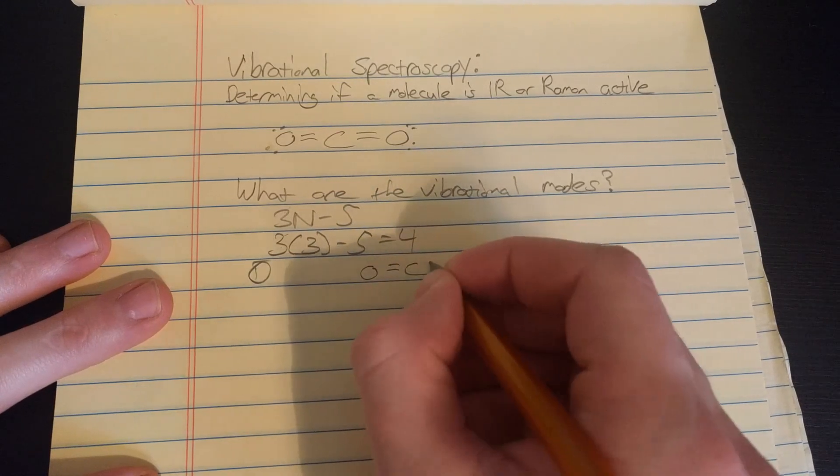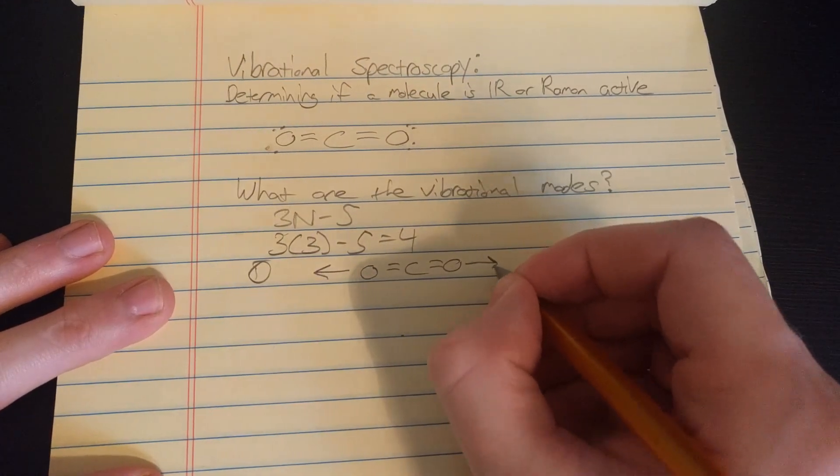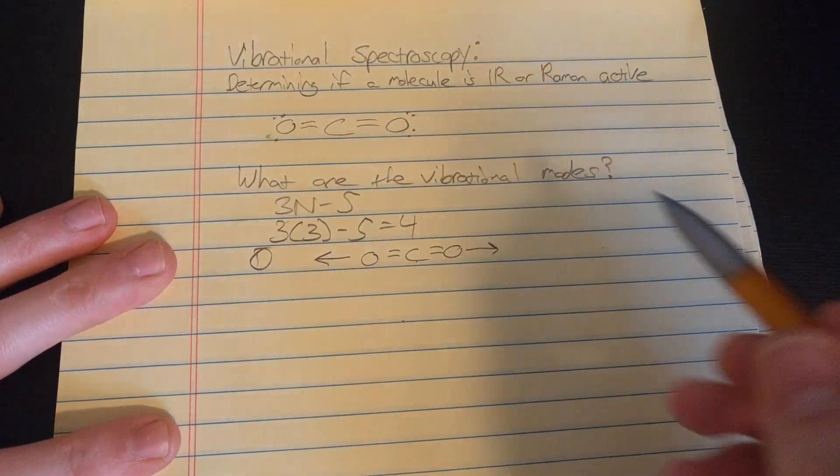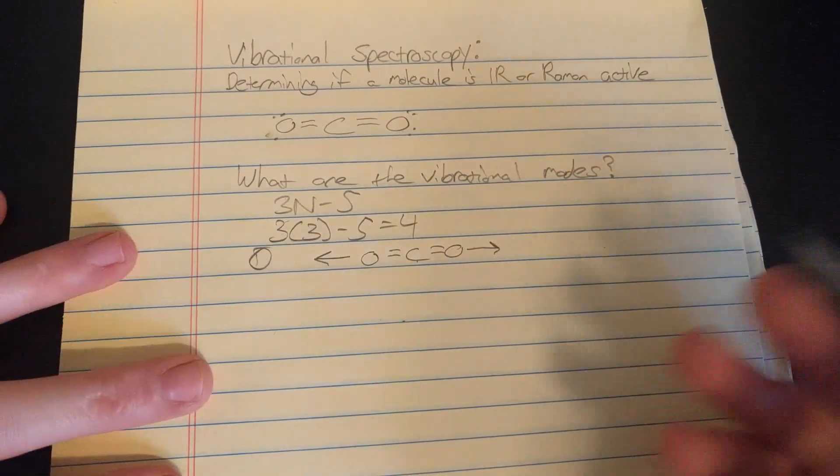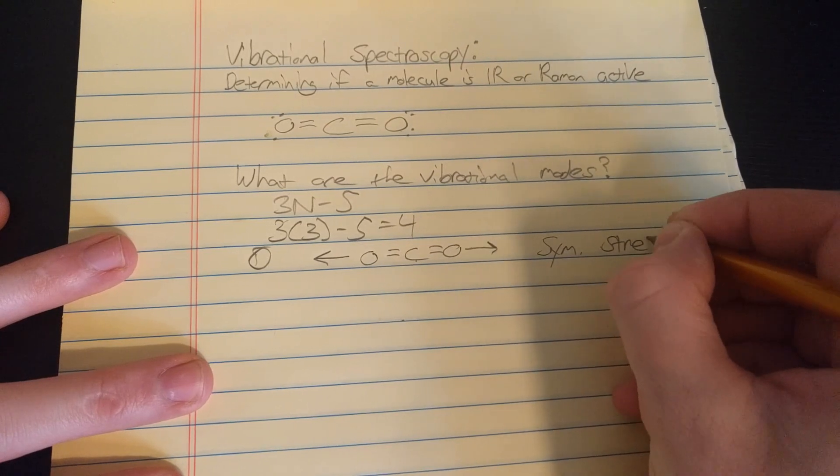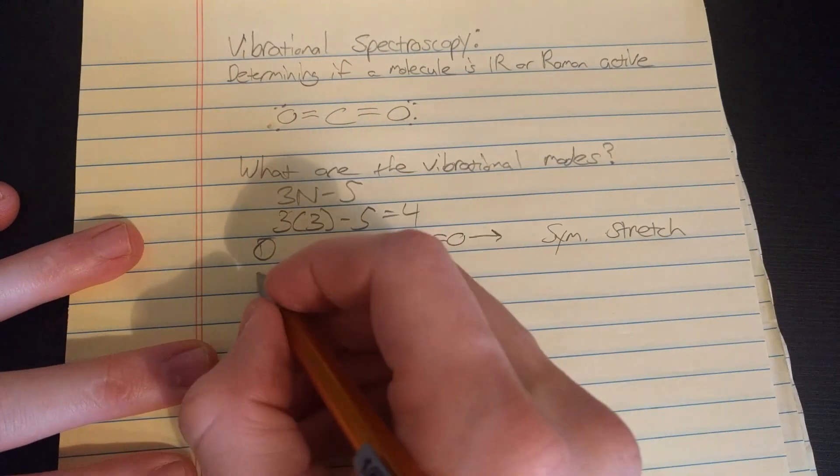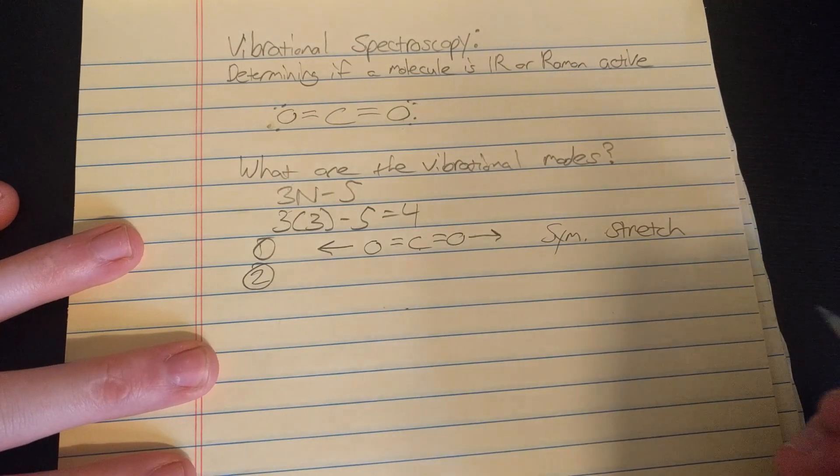So one is called the symmetric stretch, which is where both oxygens, well imagine the carbon staying stationary, it's where both oxygens extend or compress by the same amount. That's called the symmetric stretch and you can probably guess what I'm going to do next.